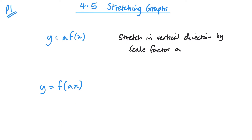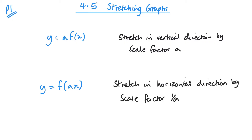Just like with translations, what happens inside that bracket affects the horizontal, but you do the opposite. What this means is that we have a stretch in the horizontal direction by scale factor one over a.